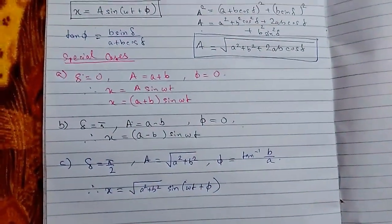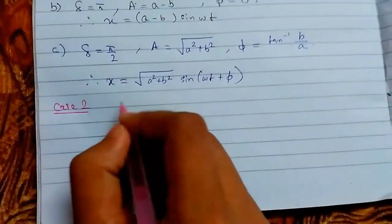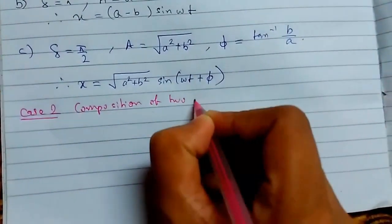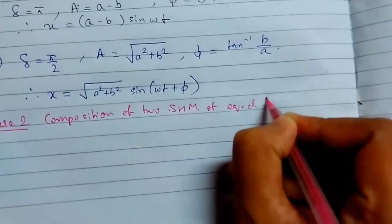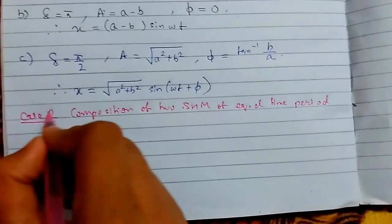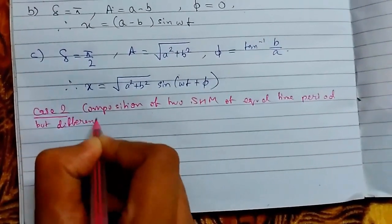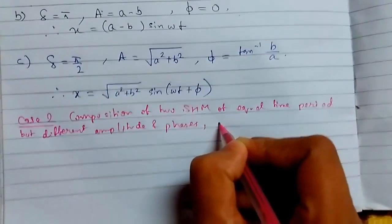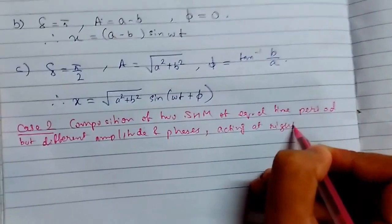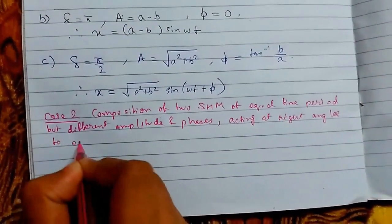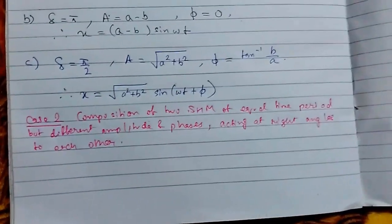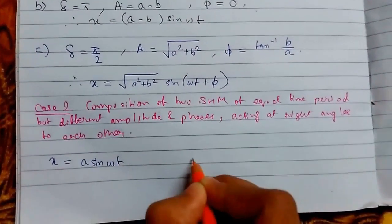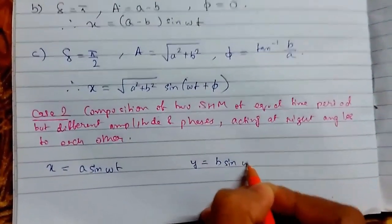Now we consider Case 2: composition of two simple harmonic motions of equal time period but different amplitude and phases, acting at right angles to each other. The displacements are x equals a sin(ωt + δ) and y equals b sin(ωt + δ), where ω equals 2πn and n is the frequency.